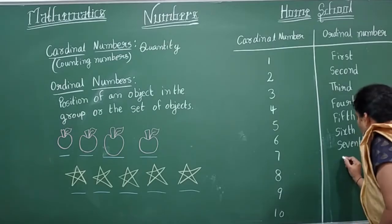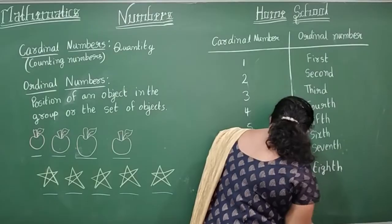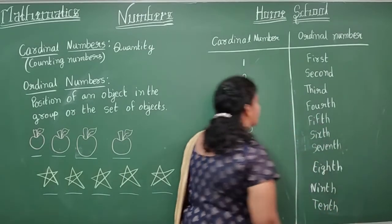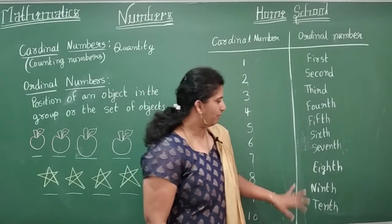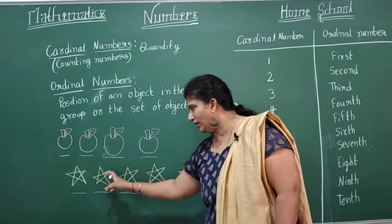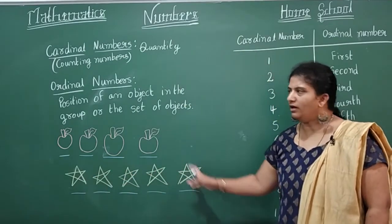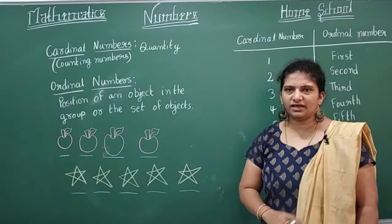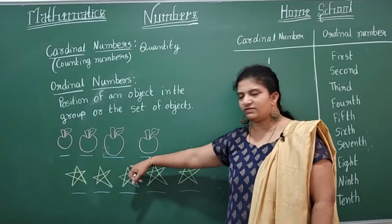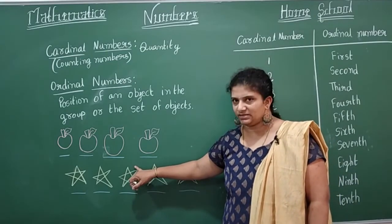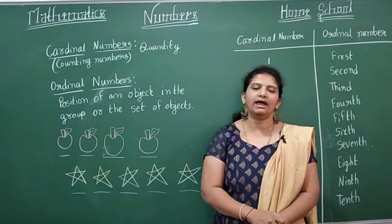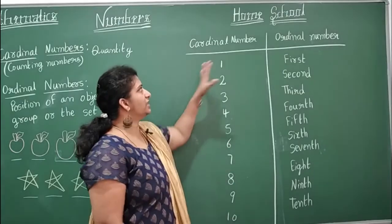Continuing: seven is 'seventh,' eight is 'eighth,' nine is 'ninth,' and ten is 'tenth.' That is how we represent ordinal numbers. Here's one more example — how many stars are there? 1, 2, 3, 4, 5. The cardinal number is five stars. The last star is at the fifth position. So if I ask the position of that star, say 'fifth place.' This is how we learn cardinal and ordinal numbers.